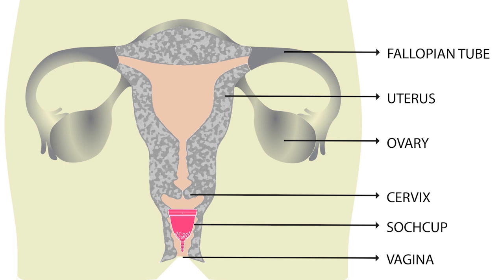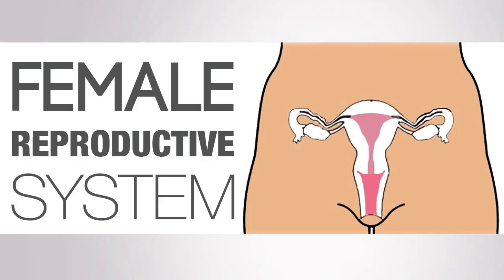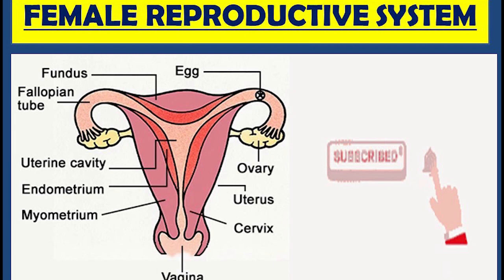During the menstrual cycle, the ovaries release an ovum, which transits through the fallopian tube into the uterus. If an egg cell meets with sperm on its way to the uterus, a single sperm cell can enter and merge with it, fertilizing it into a zygote. Fertilization usually occurs in the fallopian tubes and marks the beginning of embryogenesis.